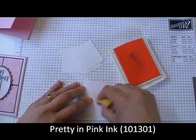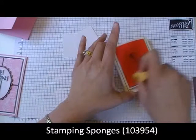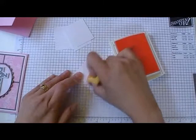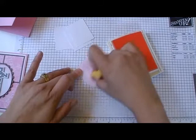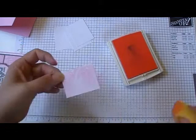I'll bring in my pretty in pink ink and my sponge from Stampin' Up and basically you just want to keep rubbing and see how the design keeps coming out. I think this is so awesome. And you can do it as light or as dark as you want. The darker, the more you rub on, the darker obviously the design will show through.